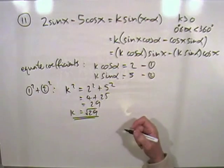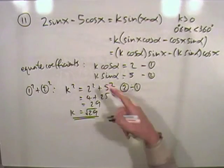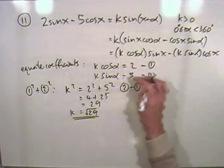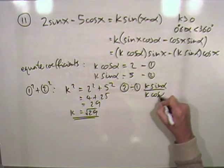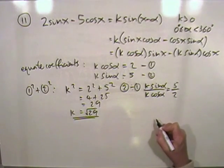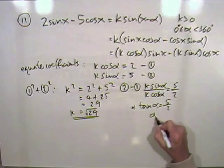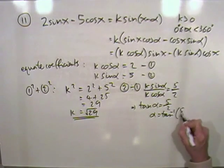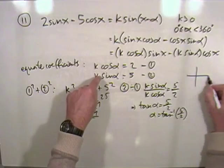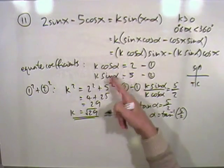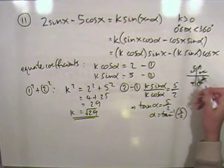Now to get alpha, I need to get rid of the k's. Dividing the equations will get rid of the k's. If you take equation two and divide it by equation one, the k's will cancel out. So I've got k sine alpha over k cos alpha is 5 upon 2. Those k's cancel out, just leaving you with sine over cos, which is tan alpha equals 5 upon 2. From which alpha is going to be the inverse tan of 5 upon 2. But where is it? Alpha can be anywhere from 0 to 360. Well they're both positive.